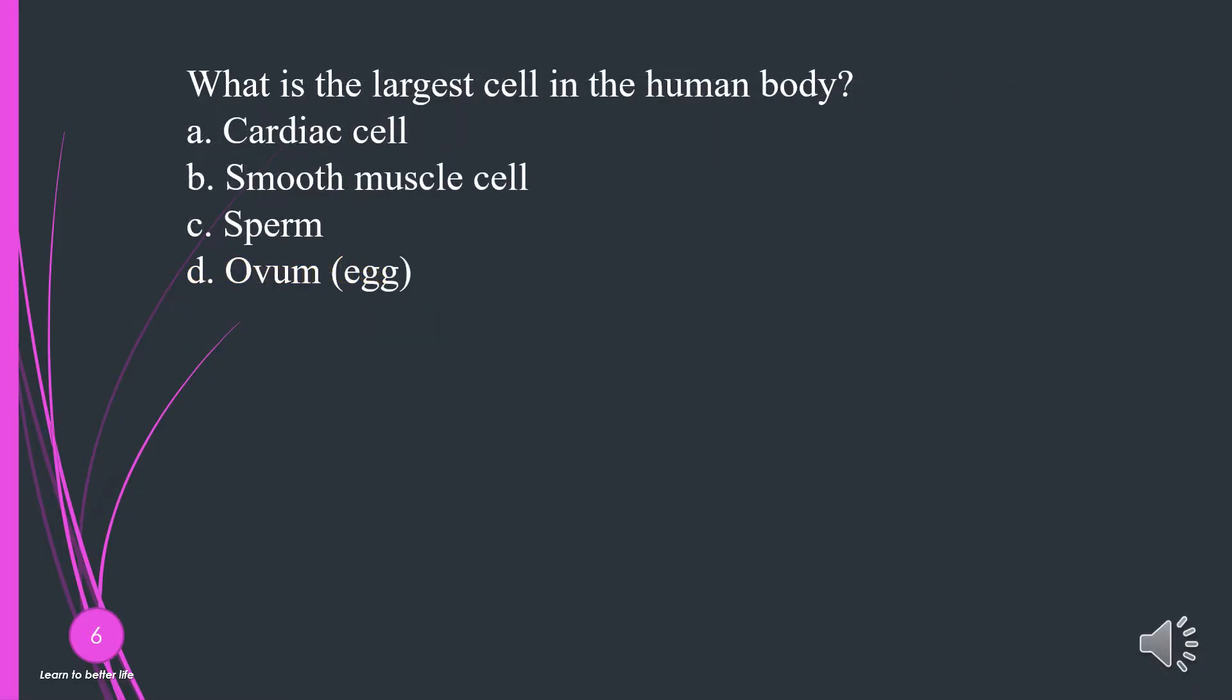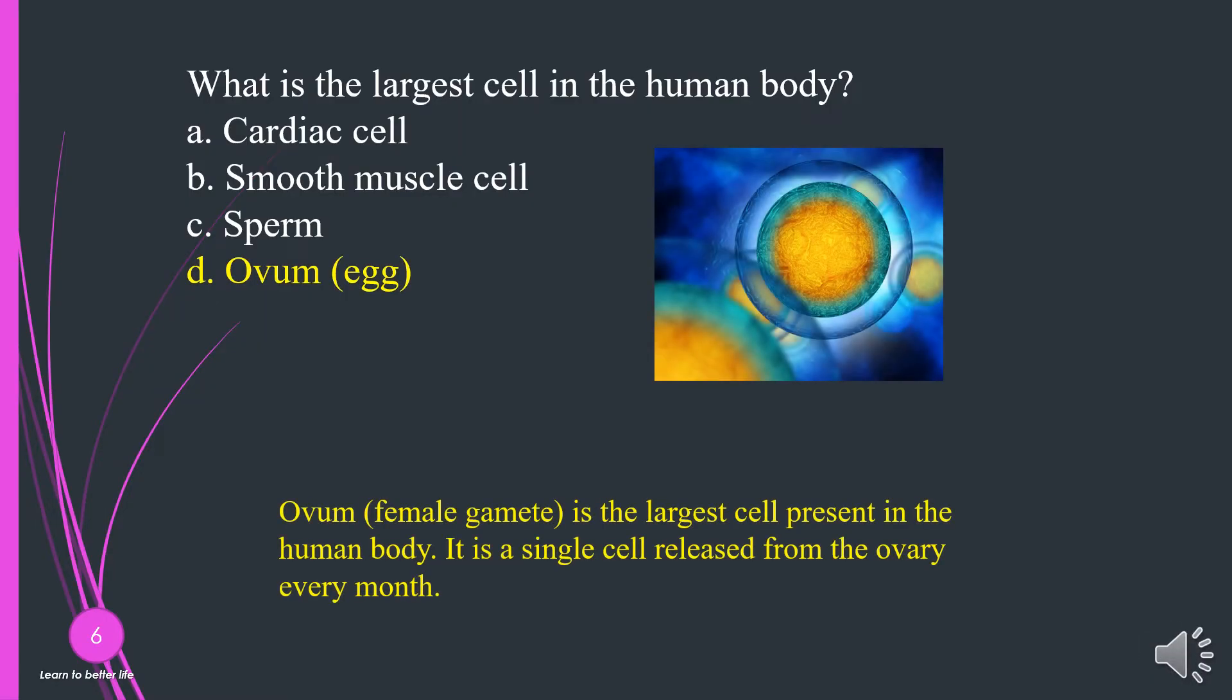What is the largest cell in the human body? A. Cardiac cell. B. Smooth muscle cell. C. Sperm. D. Ovum or egg. The answer is D, ovum or egg.